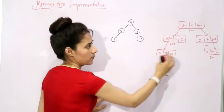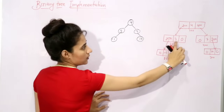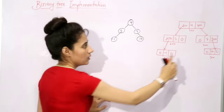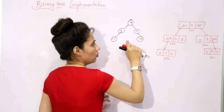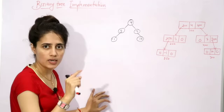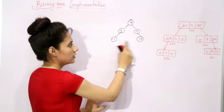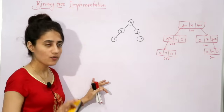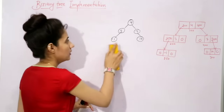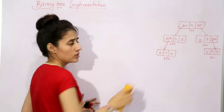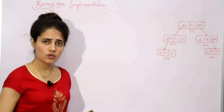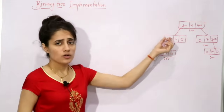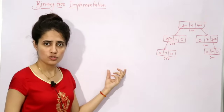We are going to represent this tree such that each node has the appropriate links. For example, this node has no right child, so that pointer is null. The node with value 7 has no left child, so the left pointer is null. And the node with value -1 is a leaf node, meaning both left and right pointers are null. We will now see how to create this binary tree, and we are going to dynamically allocate memory to these nodes.